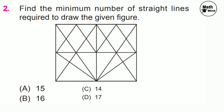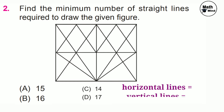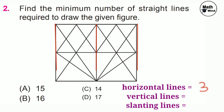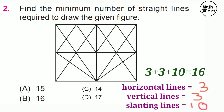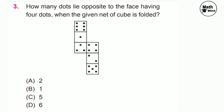I have published a video regarding counting straight lines — please watch it; the link is in the description box; it is only a 3-minute video and will solve all your doubts. In this question we have to count horizontal lines, vertical lines, and slanting lines separately. Horizontal lines: 1, 2, 3. Vertical lines: 1, 2, 3. There are 5 slanting lines in one direction and another 5 slanting lines, so total slanting lines = 5 plus 5 = 10. Total = 3 plus 3 plus 10 = 16. Minimum number of straight lines is 16; option B is correct.